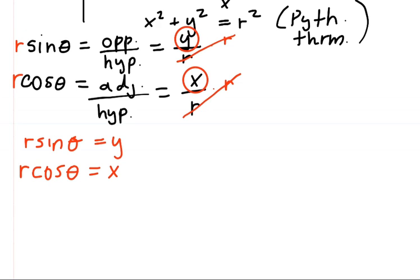And now, let's substitute these expressions for y and x back into the Pythagorean theorem. So the Pythagorean theorem says x squared plus y squared equals r squared.